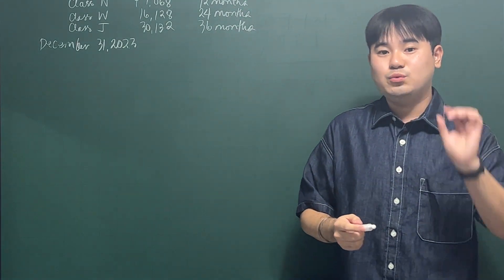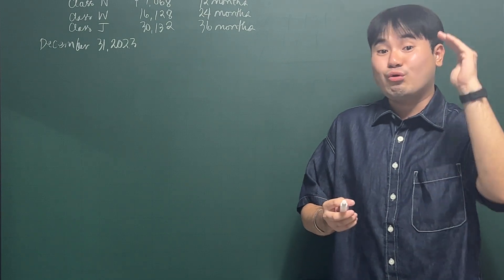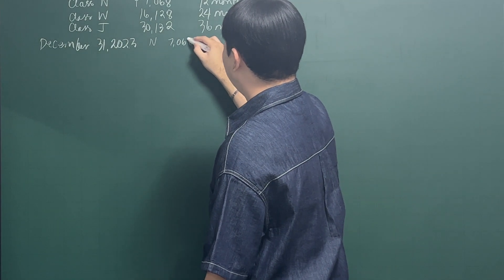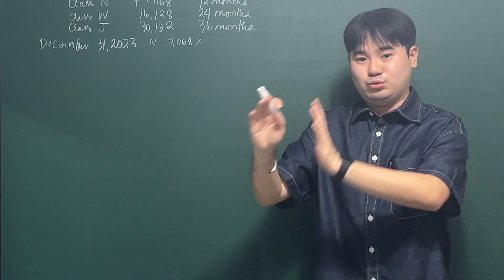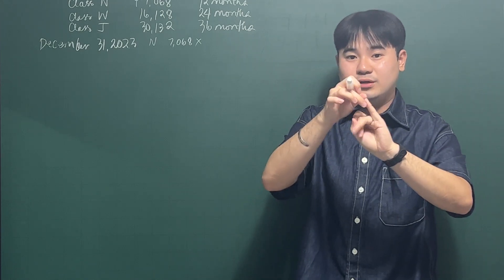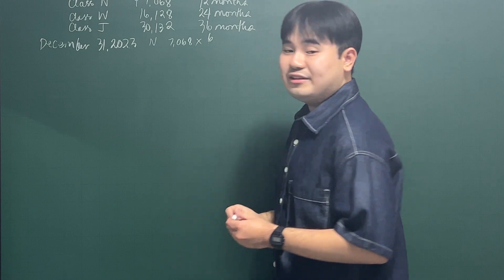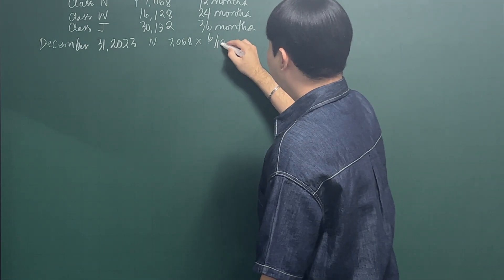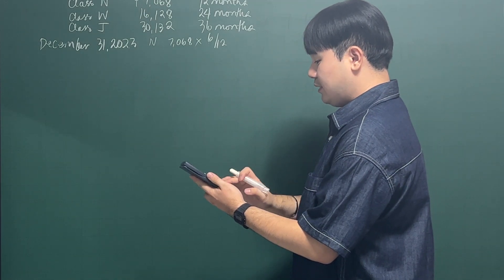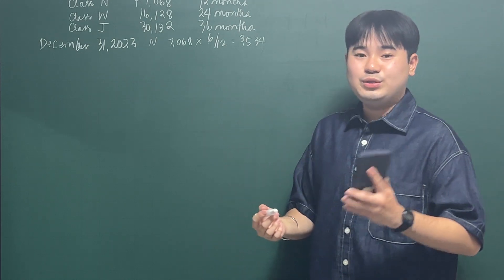For December 31, 2023, we need the expired portion of each policy. For Class N — 7,068 pesos — how many months passed from June 30, 2023 to December 31, 2023? June 30 is effectively July 1, so: July, August, September, October, November, December — that is six months. So we compute 7,068 × 6/12 = 3,534.